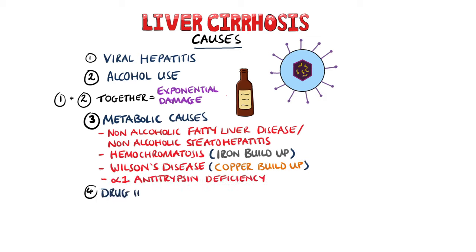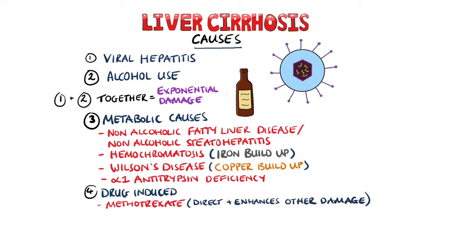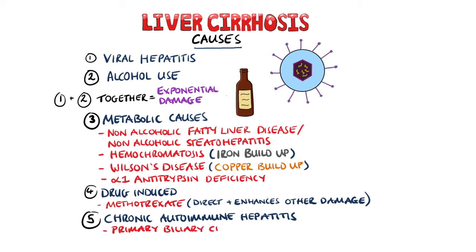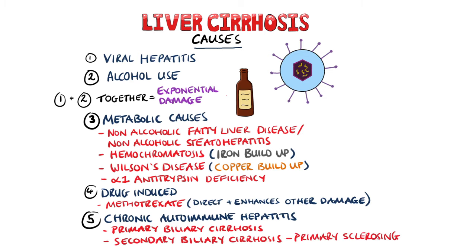You can also have drug-induced cirrhosis from compounds such as methotrexate, not only directly from itself, but also because it enhances damage from other drugs and from viral causes. Chronic autoimmune hepatitis is another cause, such as primary biliary cirrhosis, which is almost only seen in middle-aged women, or secondary biliary cirrhosis, associated with primary sclerosing cholangitis.